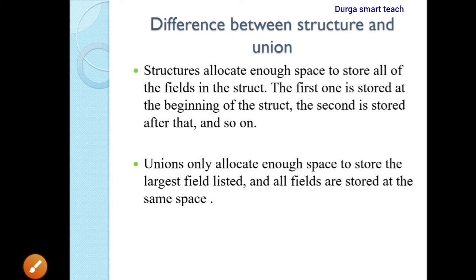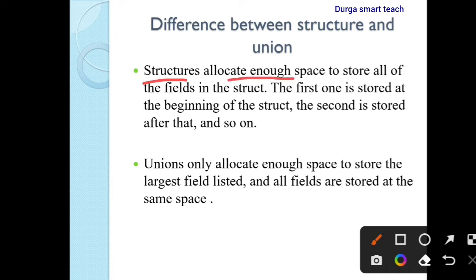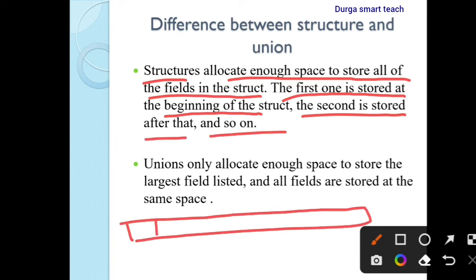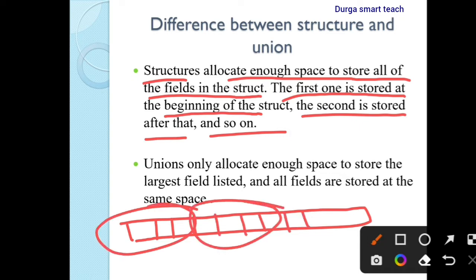Differences between structure and union — this is very important. Structure allocates enough space to store all the fields in the struct. For each member, each variable, memory is allocated in structure. The first one is stored at the beginning of the struct, the second one is stored after that, and so on — each variable is stored sequentially.